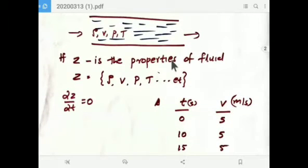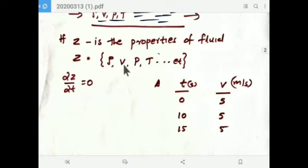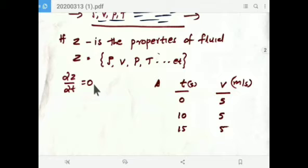The mathematical representation of steady state flow: if z is a property of a fluid — that is density, velocity, pressure, temperature, etc. — then ∂z/∂t = 0. This is the mathematical representation of steady state flow.